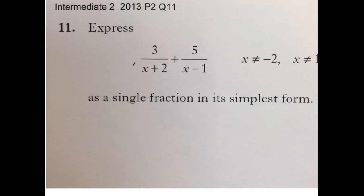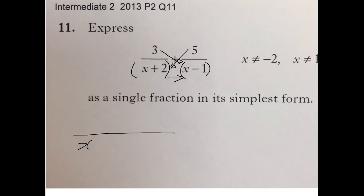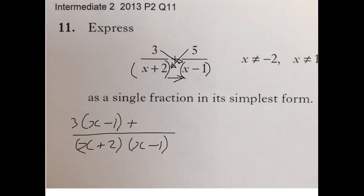Well, first of all, we put our brackets round here and round here, and then we're going to multiply — cross multiply here and here. So on this denominator, we're going to have (x plus 2)(x minus 1), and the numerator is 3(x minus 1) plus 5(x plus 2).